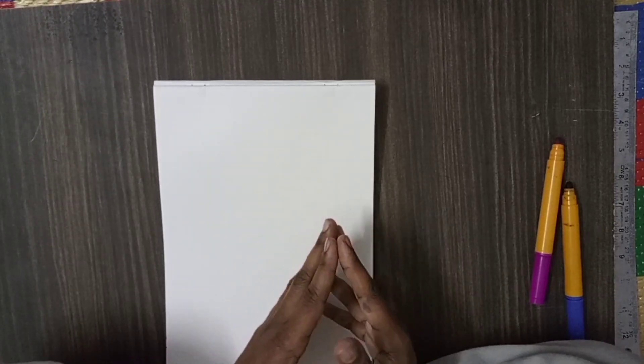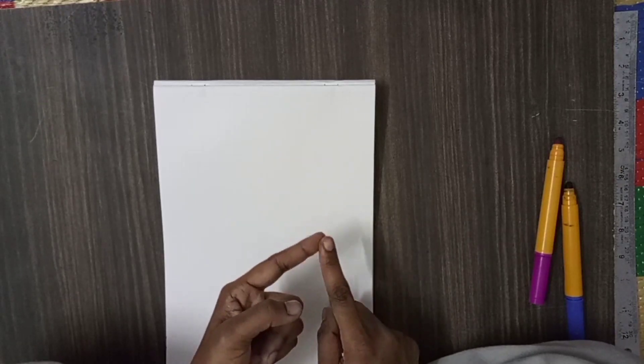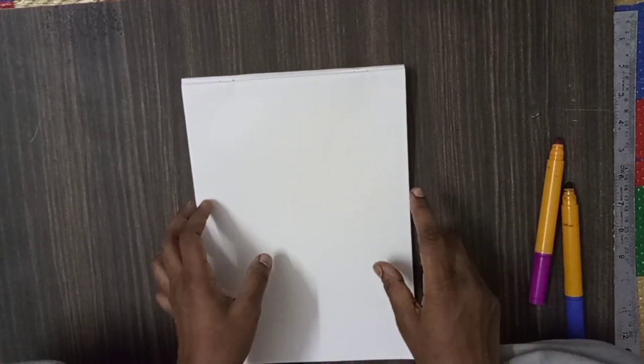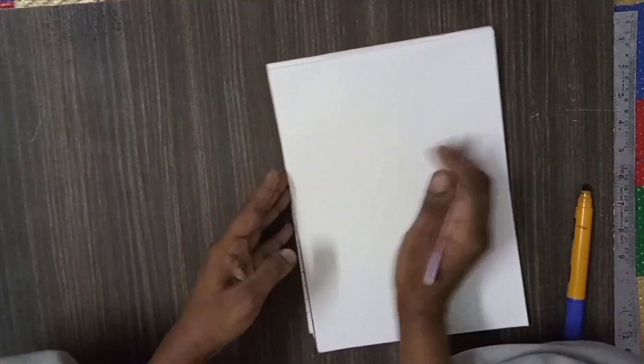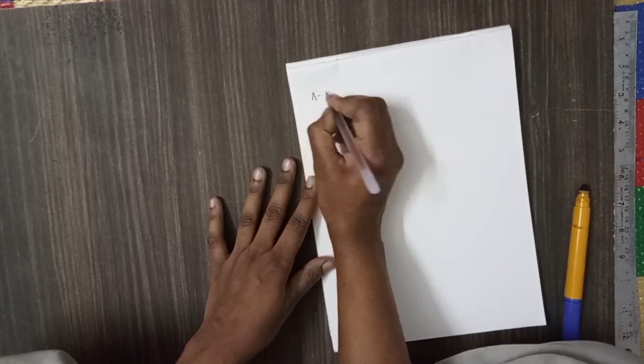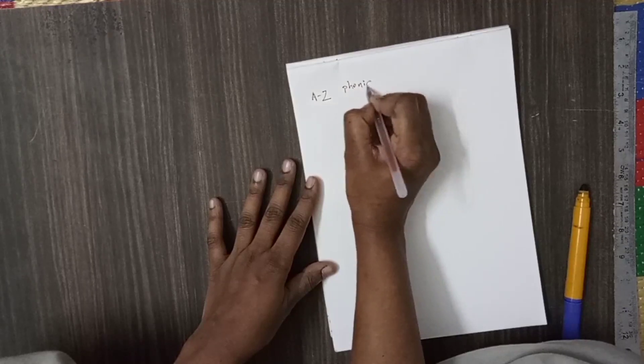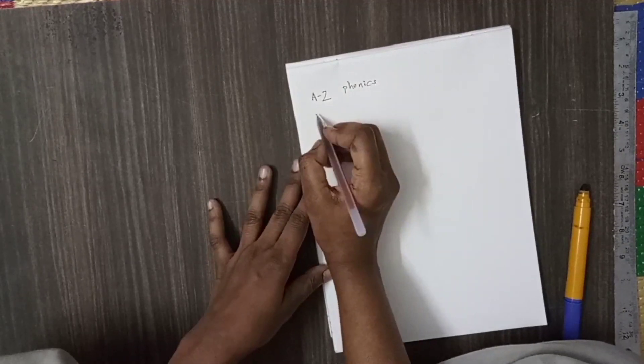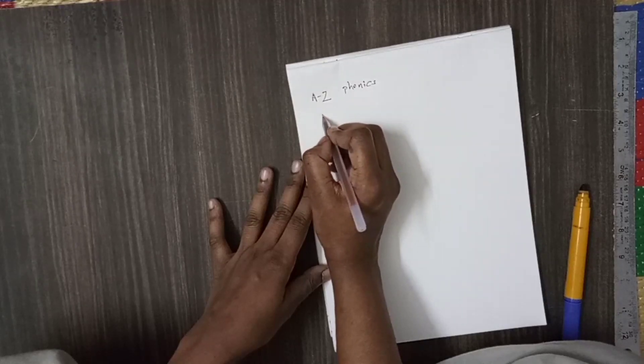Next, they should learn 2 letter words. After phonic sounds, they have to learn 2 letter words with each vowel sound. For example, look here. First, they should know the A to Z sounds, phonic sounds. Next, they should learn 2 letter words with each vowel.